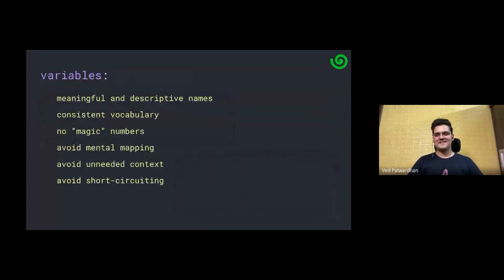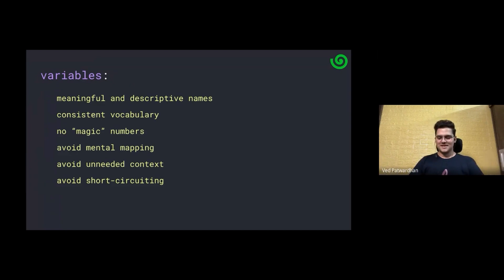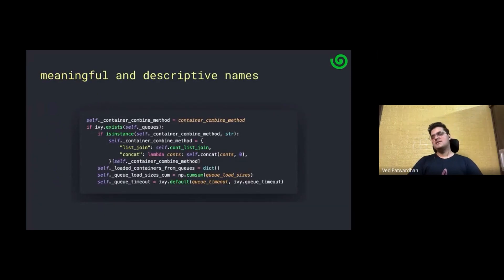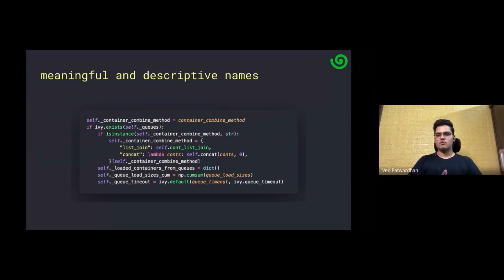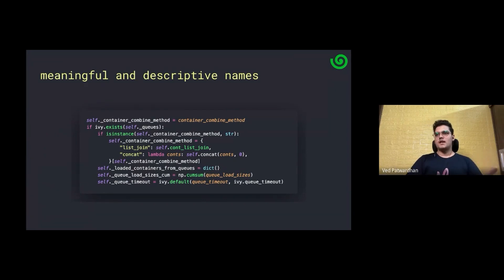Now talking about variables. The more complex your implementation gets, the more descriptive your variable names should be, because we could potentially have people from the community wanting to add or update anything in the framework, frontends, or testing. You should make it as easy as possible for them to understand what's happening. Obviously this has a limit — we shouldn't add unnecessary information in the variable name — but the name should tell the person reading the code exactly what you're trying to do.